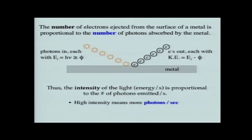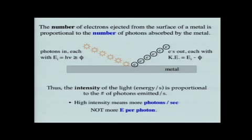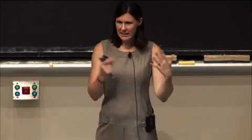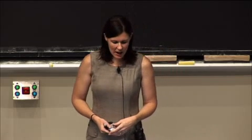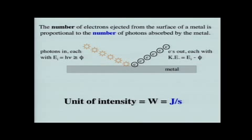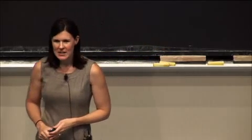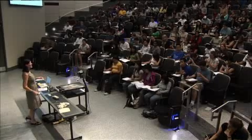If we have high intensity, we're talking about more photons per second — but that does NOT mean more energy per photon. Increasing intensity means increasing the number of photons, not the energy in each photon. In terms of units, intensity is usually given in watts, but in SI units it's joules per second. You should now have all the background needed on the photoelectric effect to solve any type of problem.